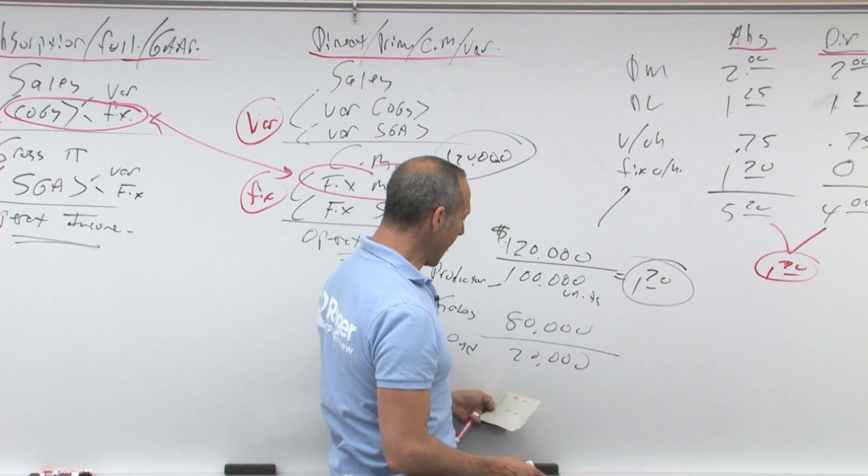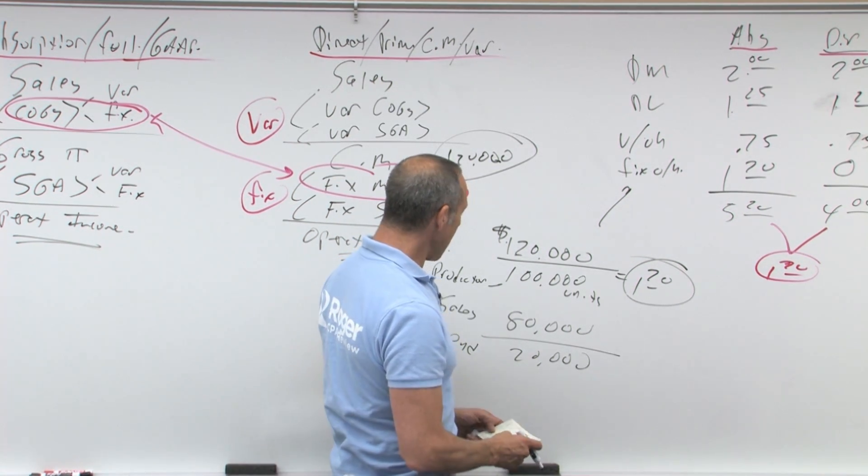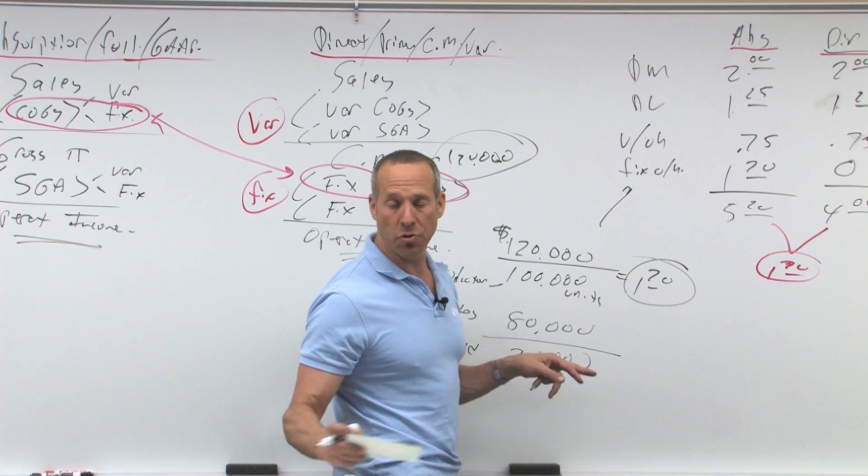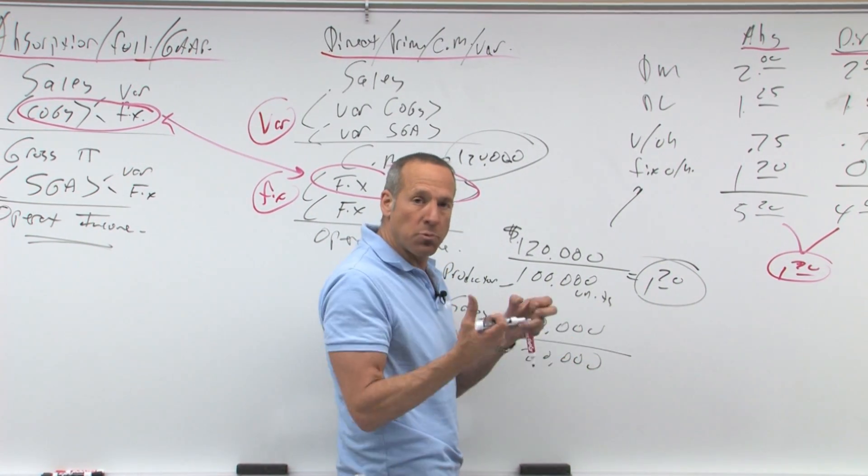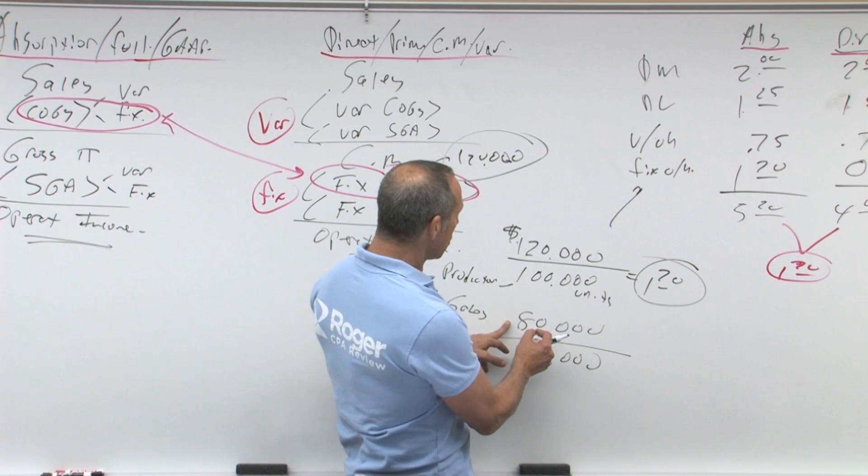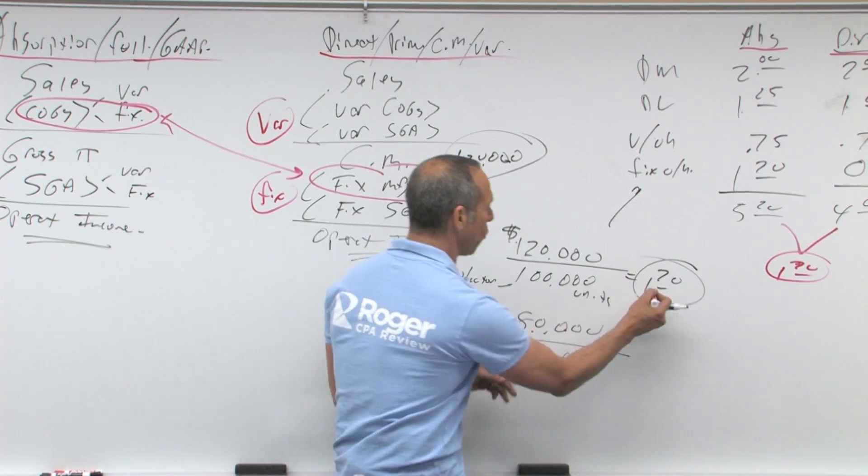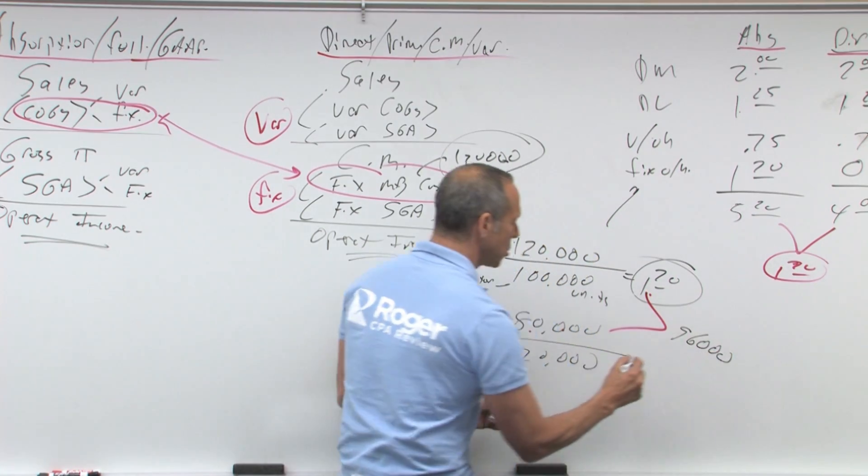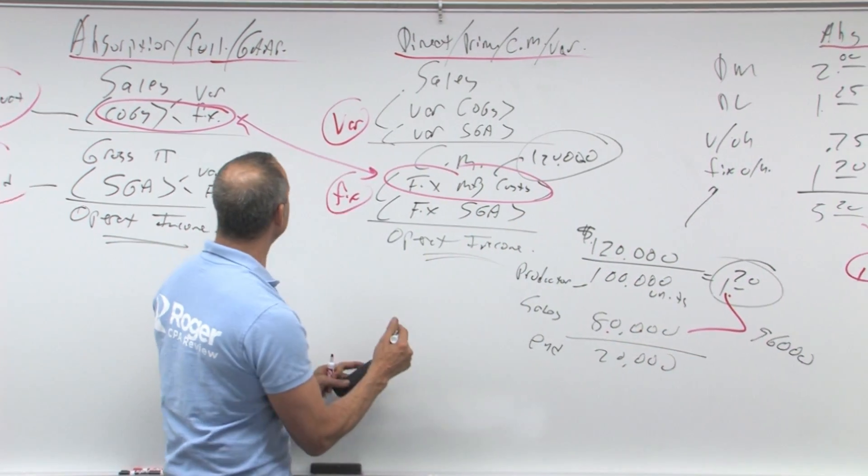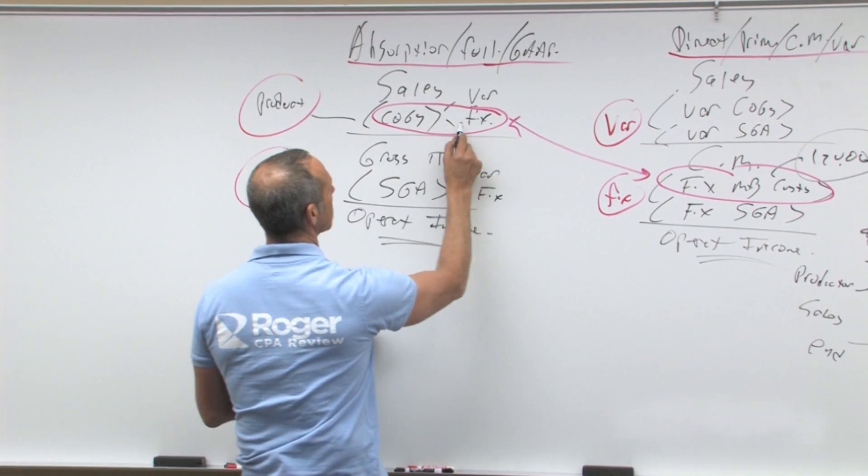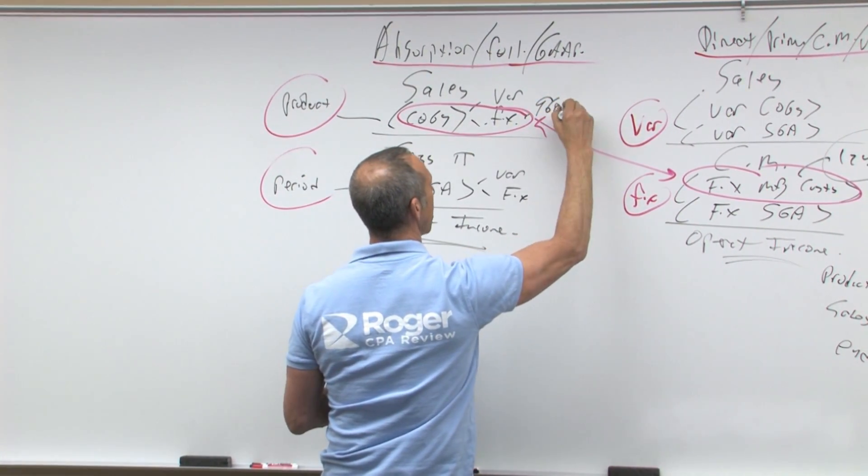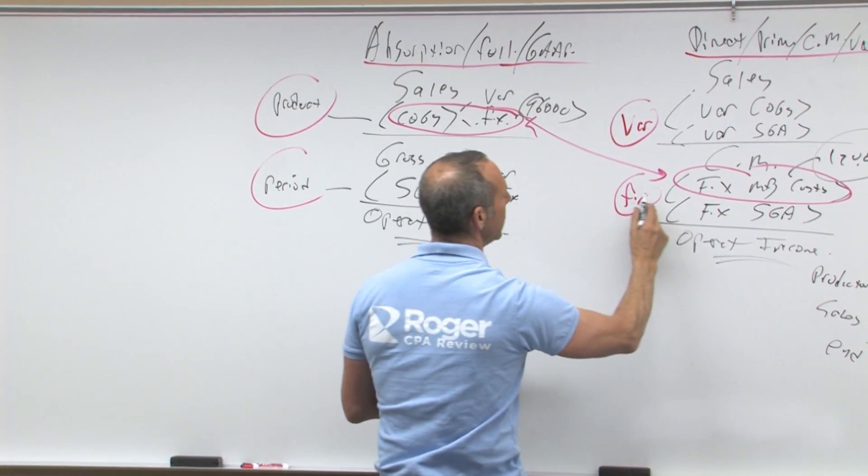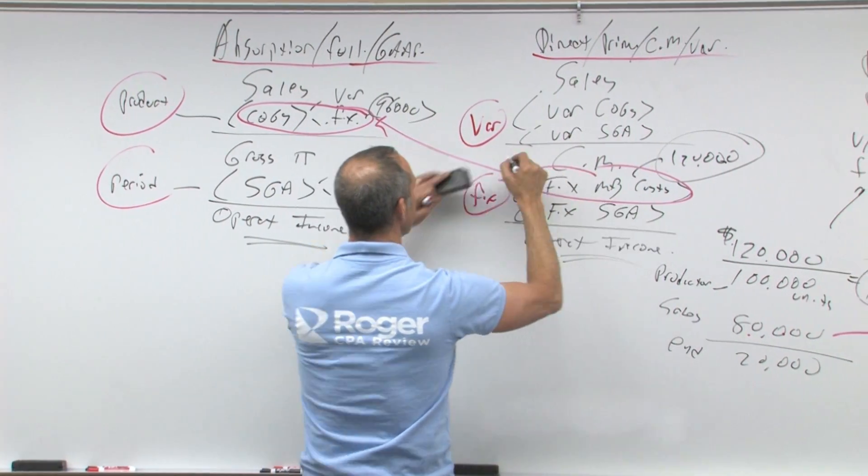Now what happens is if I sold 80,000 units, what's going to happen under absorption? What does GAAP say? GAAP says your costs are going to be 80 at $1.20 is $96,000. So over here, I'm going to expense fixed cost of goods sold is going to be $96,000. Here it's going to be what? $120,000.